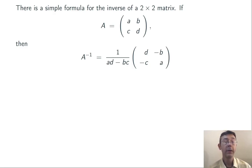Looking at this formula, we can immediately see when a matrix A is going to have an inverse when it's a 2 by 2 matrix. There's going to be an inverse as long as ad - bc is not 0. The matrix is going to be singular if ad - bc is 0.